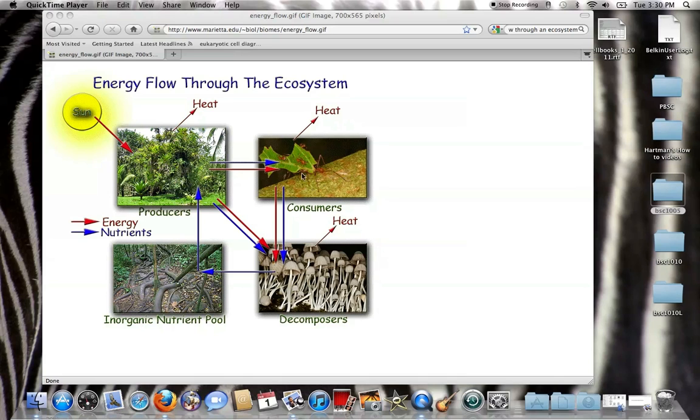So this right here is the cycle, the energy flow through the system. But notice here, I didn't talk about this, the sun. The sun is the primary energy source that basically gets this cycle going. The sun provides the energy so that the plants can photosynthesize.